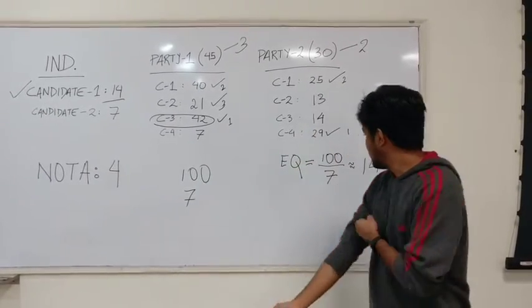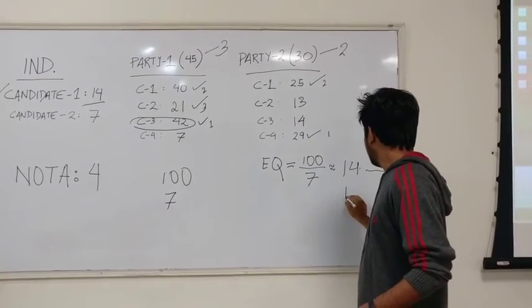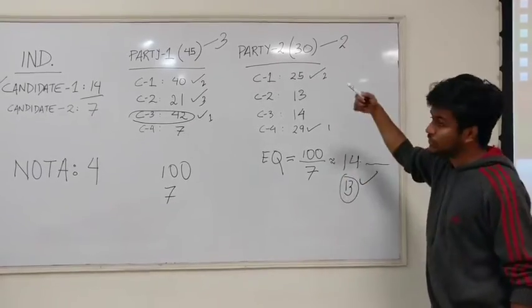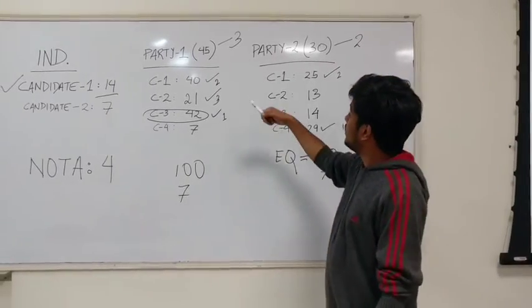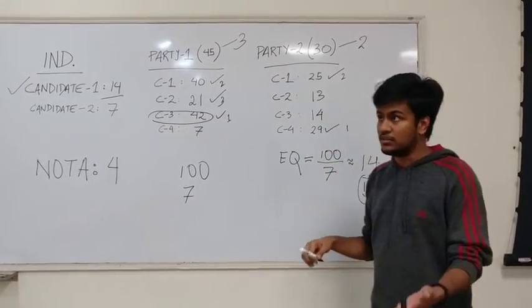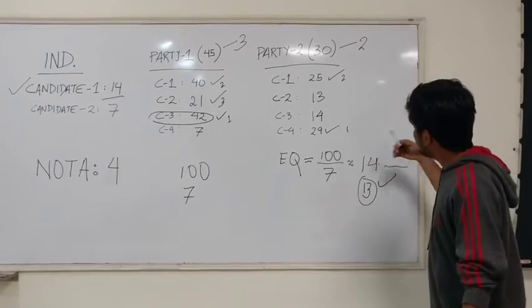The next step in this process is the EQ now drops to the next lower integer which is 13. Now with 13 we redo these calculations. Party 1 will still have three seats because 13 times 3 is 39. Party 2 also still gets two seats.